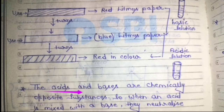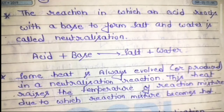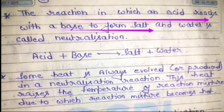The acid and bases are chemically opposite to each other. So when an acid is mixed with a base, they neutralize each other's effect. Acid aur base ko jab mix kiya jaata hai, to dono ek doosre ki effect ko neutralize kar dete hain — nullify kar dete hain. The reaction in which an acid reacts with a base to form salt and water is called neutralization reaction.